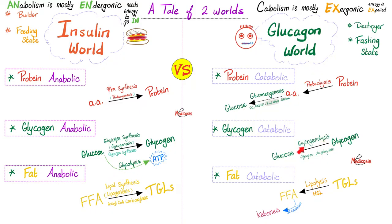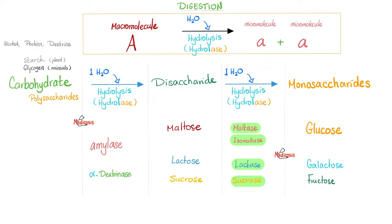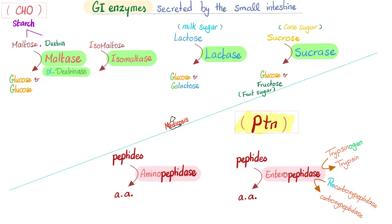Gluconeogenesis and glycogenolysis are in the glucagon or catabolic land — the fasting or starving state. You ate carbohydrates, you digest them from macromolecules into micromolecules; only the micro can be absorbed — i.e., cross the membrane from your gut to your blood. Metabolism then takes place in the liver. If you ate sucrose, the enzyme sucrase in the brush border of your intestine breaks down the disaccharide into one glucose molecule and one fructose molecule.